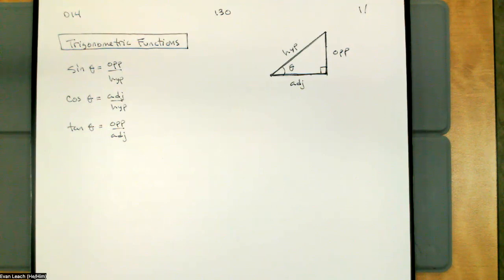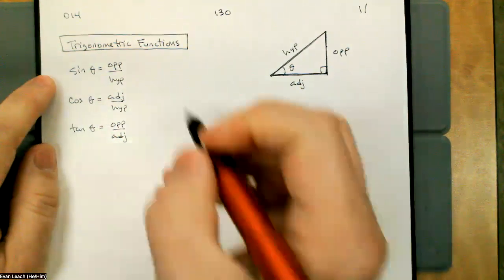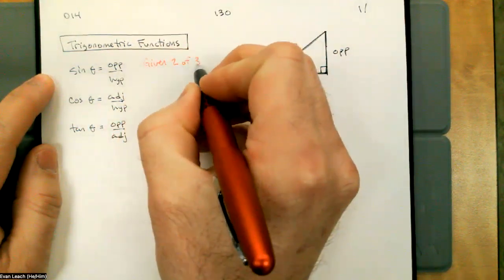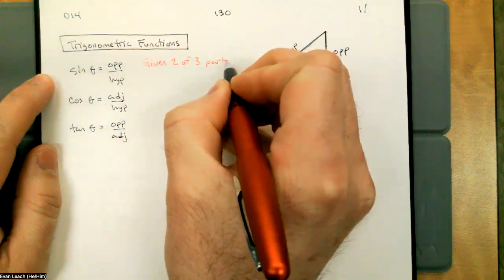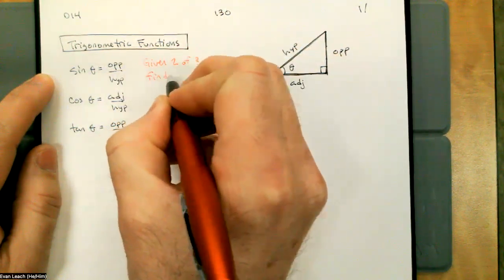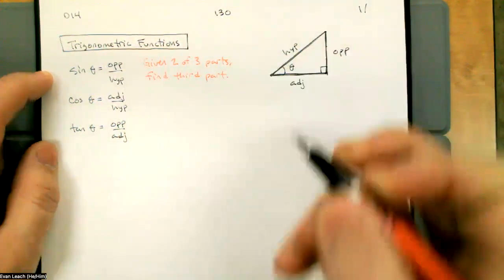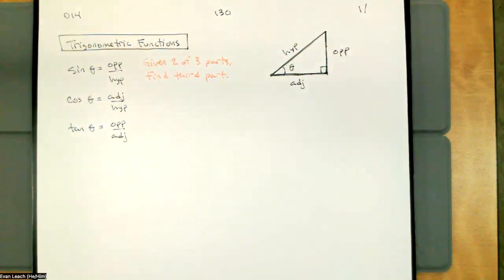The trig function is telling us to do things. It's not one of the variables that we need to figure out. If I have an equation with three pieces, the game is I have to give you two of them and ask you for the third one. This is a two out of three game. Given two out of the three parts, find the third part. That's the math game at this point.